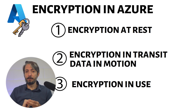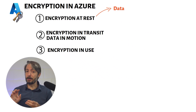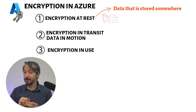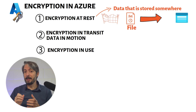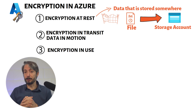The first one, encryption at rest, is all the data that is stored somewhere — it is resting. A file, for example, that you have stored on a storage account is an example of something using encryption at rest.